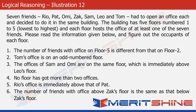This question mentions 7 friends who have taken an office each in the same building. This building has got 5 floors numbered from 1 to 5. Each floor has got the office of at least one of the 7 friends. With the help of the 6 statements given in the question, we need to figure out the occupants of each floor. I would advise you to pause the video here for some time and attempt the question. Resume the video once you are done with it.